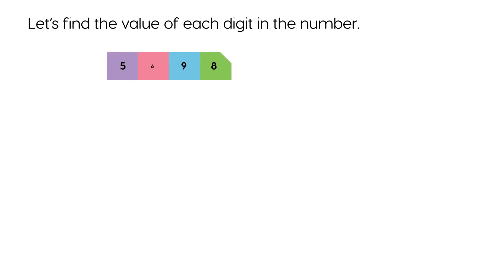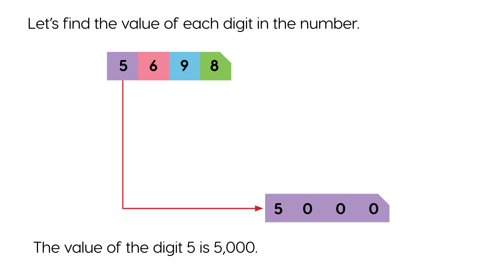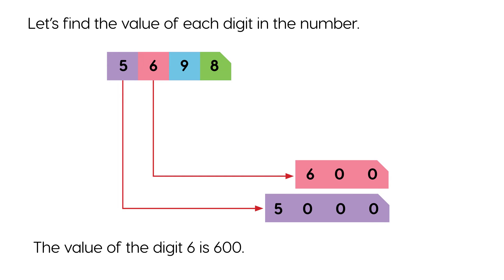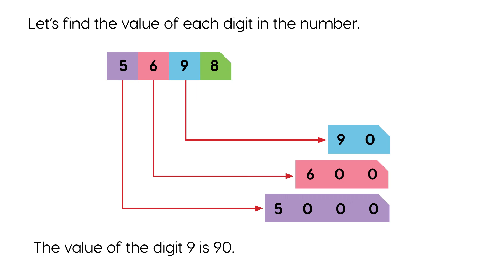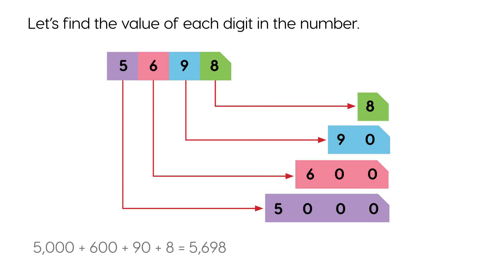Let's find the value of each digit in the number. The value of the digit 5 is 5000. The value of the digit 6 is 600. The value of the digit 9 is 90. The value of the digit 8 is 8. 5000 plus 600 plus 90 plus 8 equals 5698.